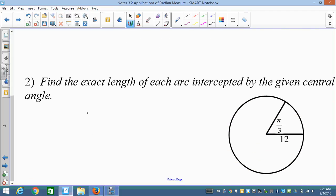So first problem for you to try: find the exact length of each arc intercepted by the given central angle. Remember, our equation is S equals R theta. So R is 12, theta is pi over 3. So 12 pi over 3 gives us S equals 4 pi. And yes, you will leave your answer in terms of pi. Always give exact values unless they ask you for a decimal. Exact values means you leave pi alone, leave radicals alone unless it's a perfect square.